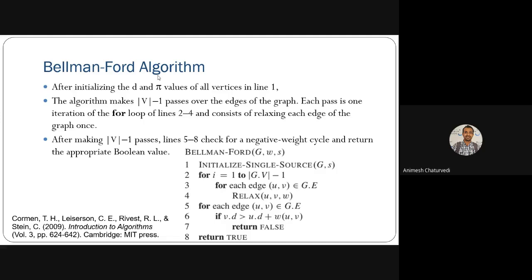We set the parent (pi) of all remaining vertices to null, since we don't know who is the parent of whom. The algorithm then executes for V minus one passes over all edges of the graph, and the edges can be selected in any order.